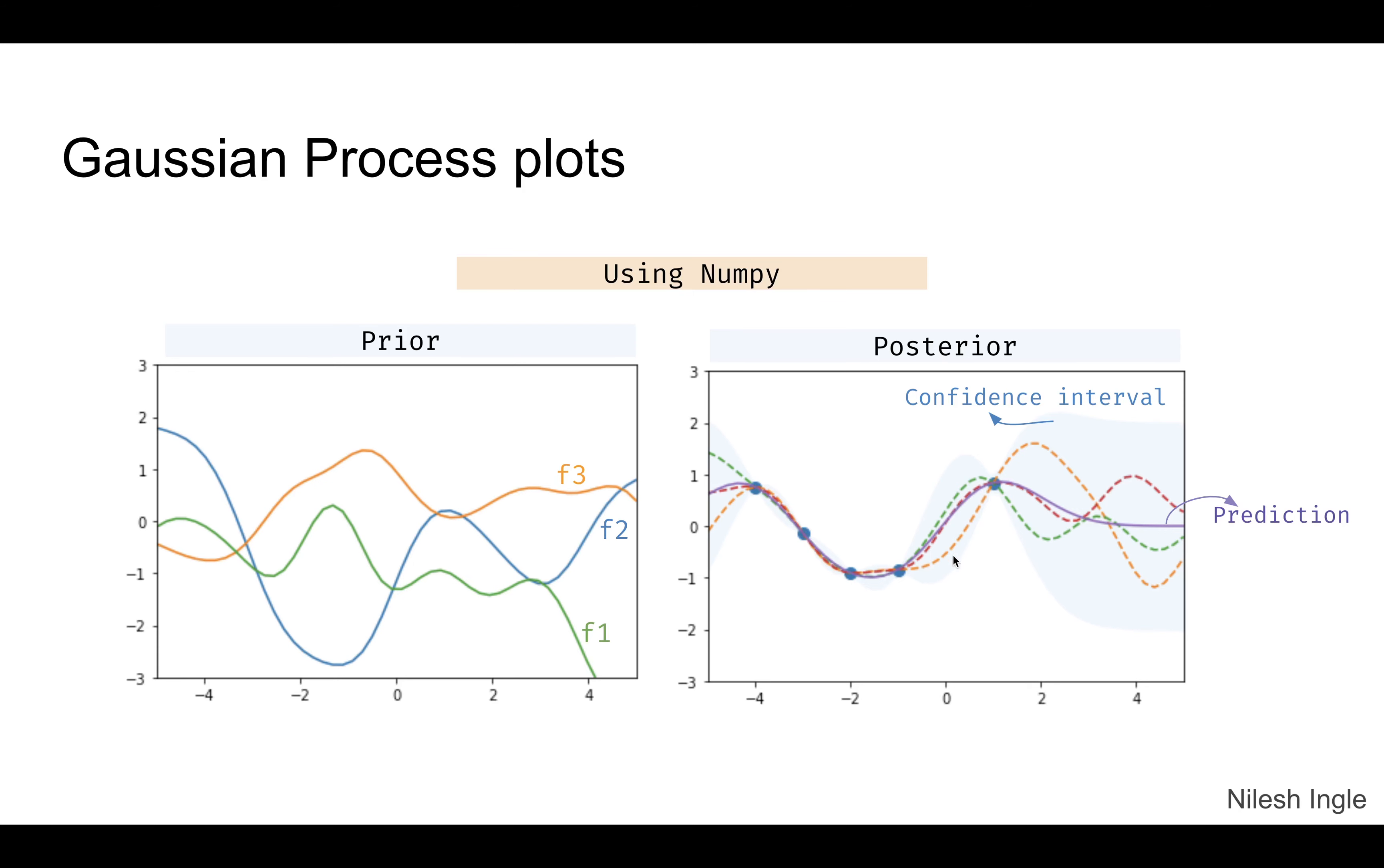You can see wherever there are data points, the confidence interval range is also much narrower, such as in these areas. Whereas once we leave those regions of observed data, when we move into a new area where there is no observed data, then the confidence interval range increases dramatically.